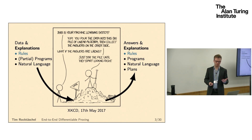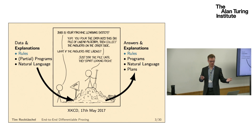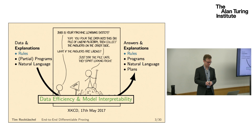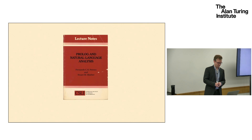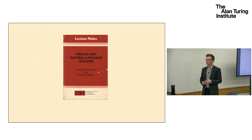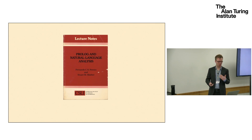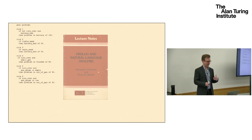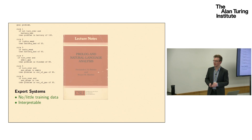So how can we fix this? My approach has been to think about how we can train these systems not just from individual labeled training examples, but how we can also get explanations into these deep learning systems in the form of rules, partial programs, and maybe at some point even natural language. And conversely, how can we get explanations out of these systems, again in the form of rules, induced programs, and possibly natural language.